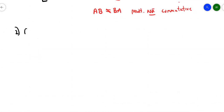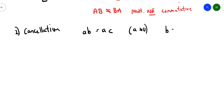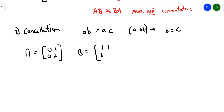Another thing that does not apply to matrices is cancellation — you might think of it as dividing. For numbers, if AB equals AC and A is not zero, you can cancel A from both sides to conclude B equals C. In matrix terms, let's try: matrix A is 0, 1, 0, 2; matrix B is 1, 1, 3, 4; and matrix C is 2, 5, 3, 4.